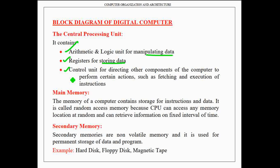The next important component of a digital computer is the memory unit. We can classify the memory unit into two types: main memory and secondary memory. Main memory is used for storing instructions and data. It is also called random access memory because the CPU can access any memory location at random and retrieve information in a fixed interval of time. Secondary memories are non-volatile and used for permanent storage of large amounts of data and programs. Examples of secondary memory are hard disk, floppy disk, and magnetic tape.